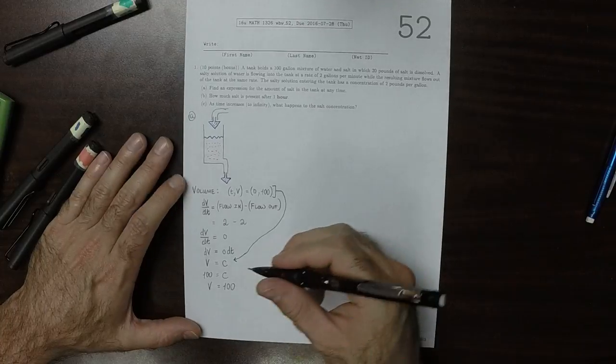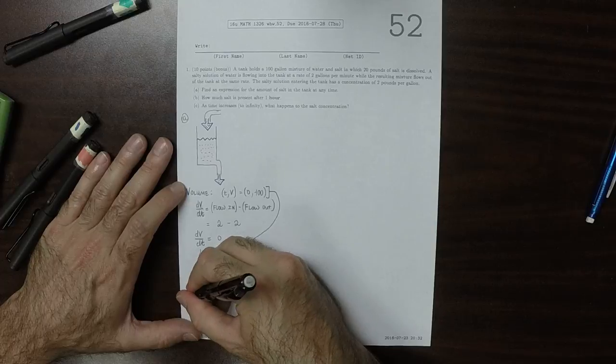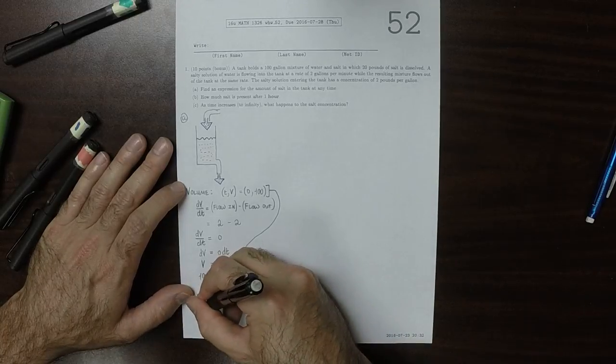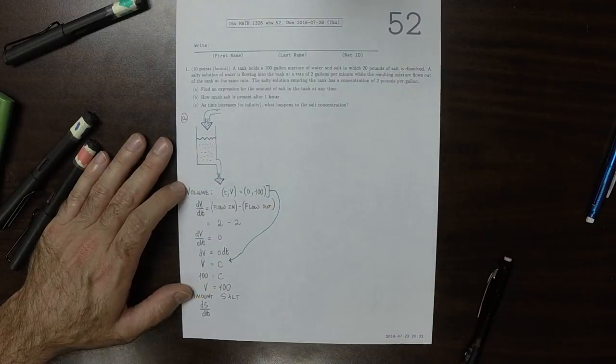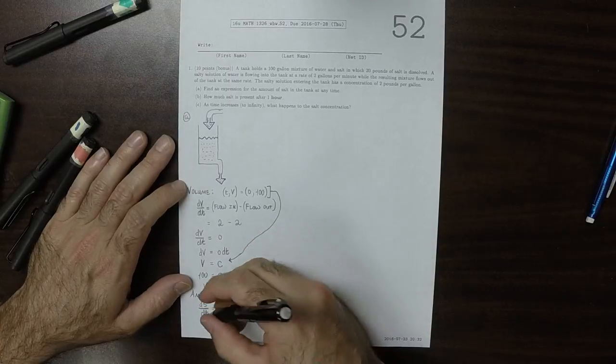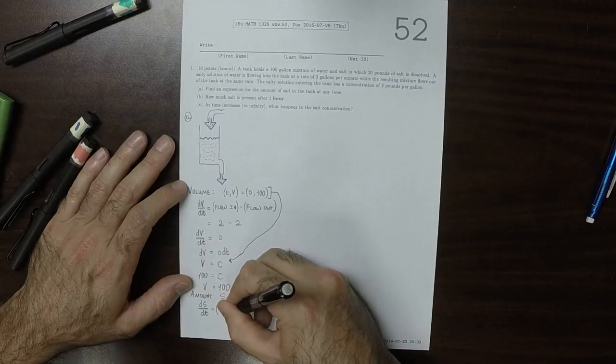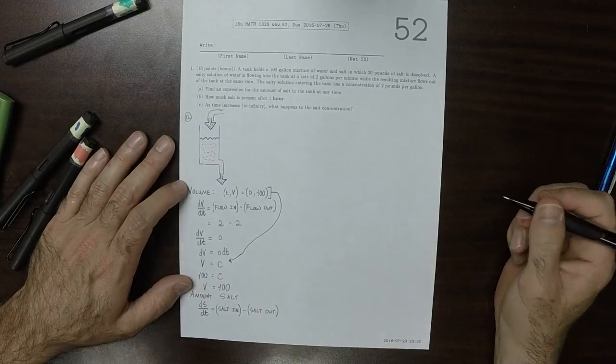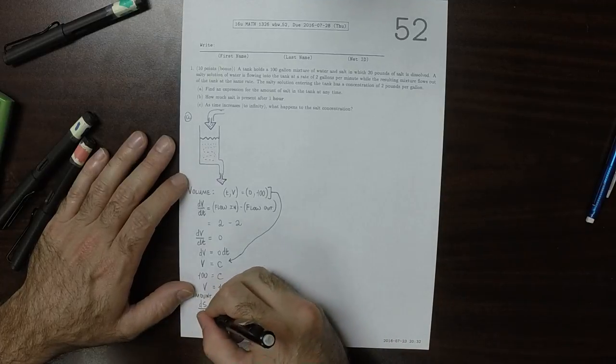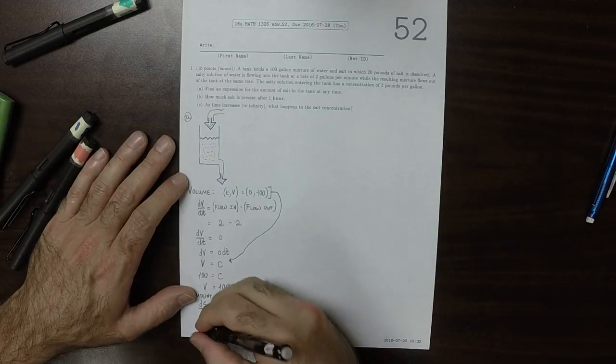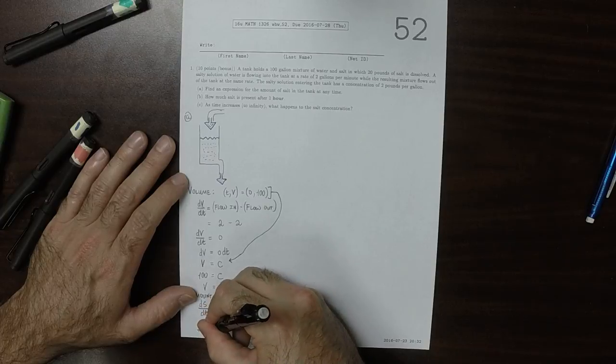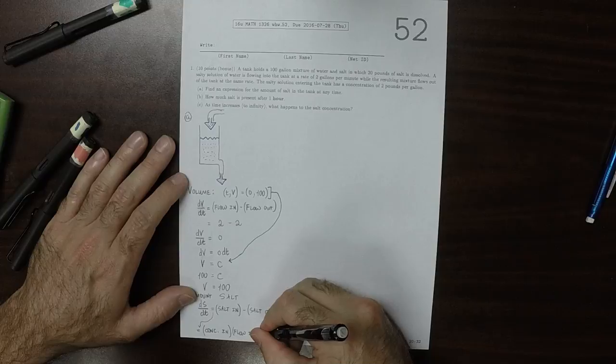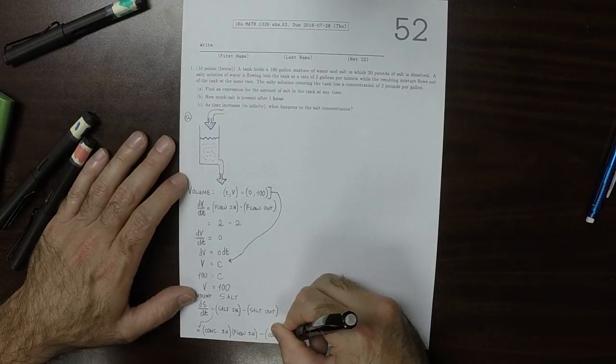So now let's figure out the amount of salt. What we know is that the amount of salt is changing, and the way that it's accounted for is that you've got salt that's coming in minus salt that's going out. And generally speaking, the amount of salt coming in, that is the concentration that's coming in multiplied by the flow in, minus the concentration going out times the flow out.